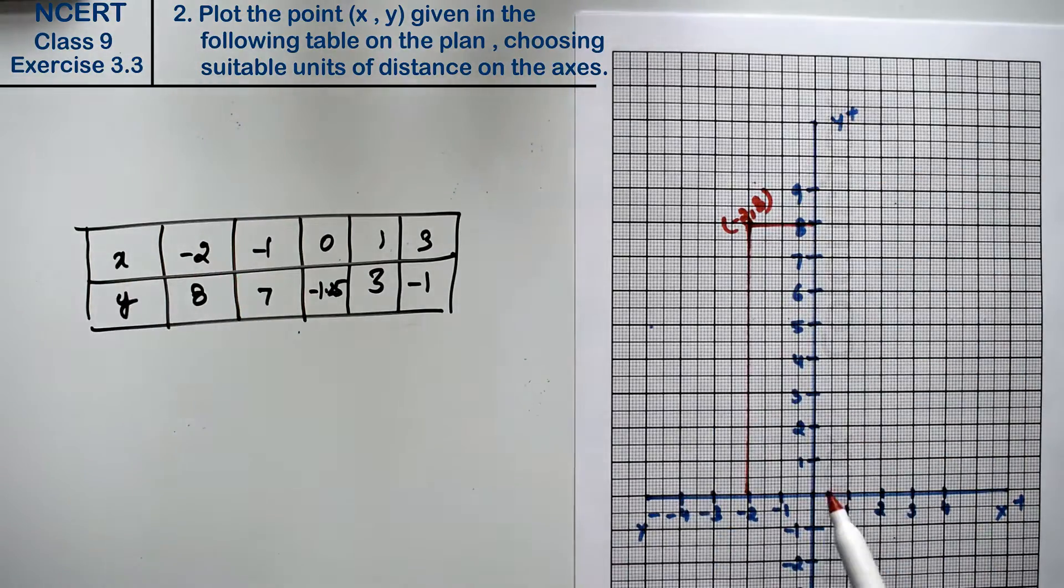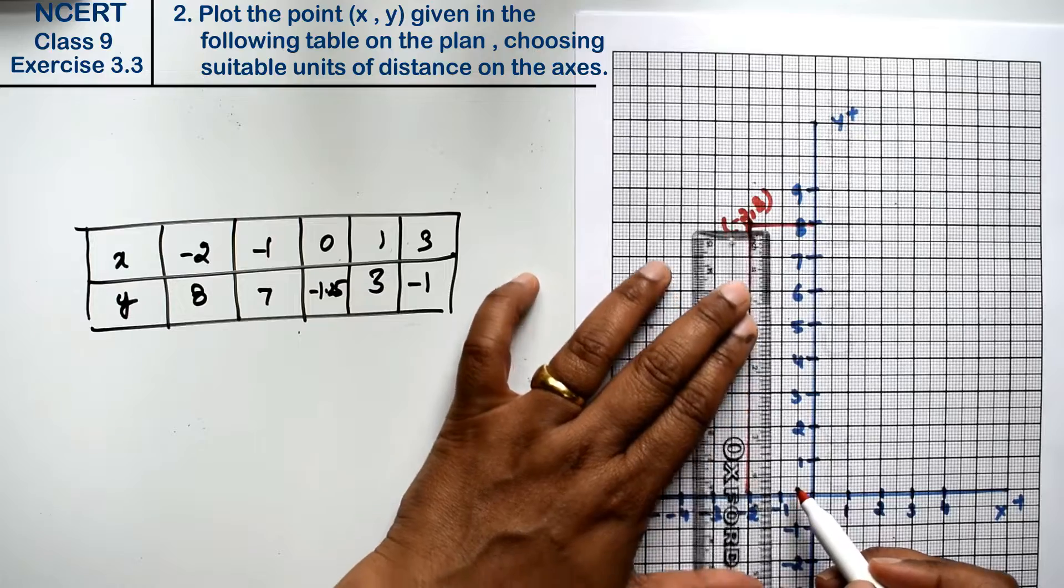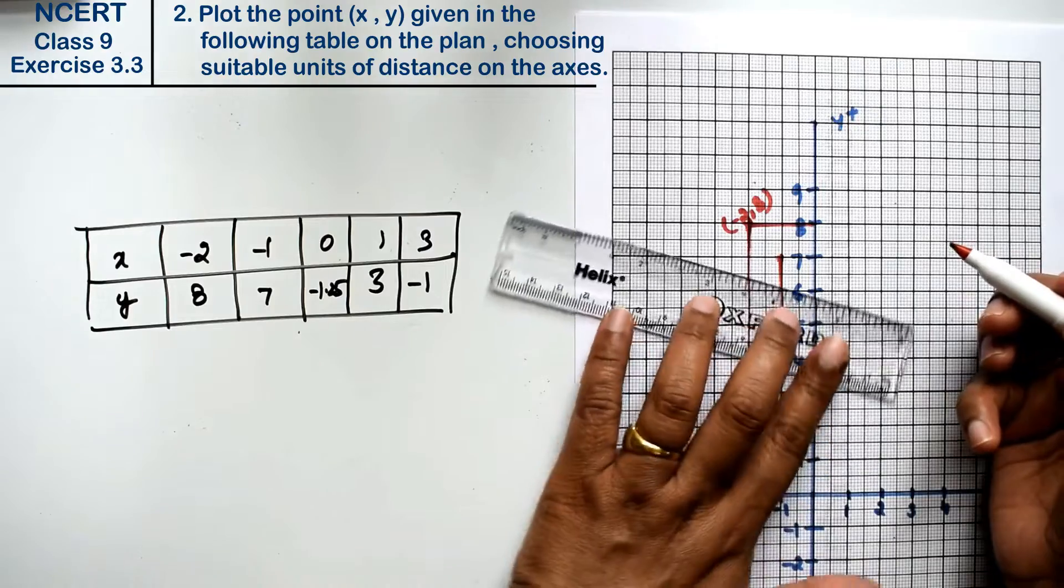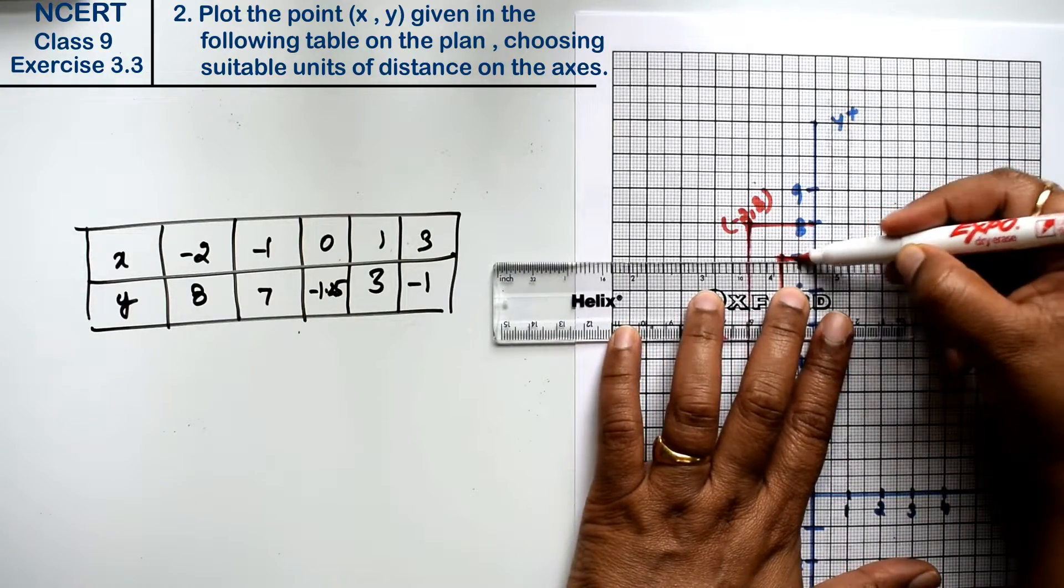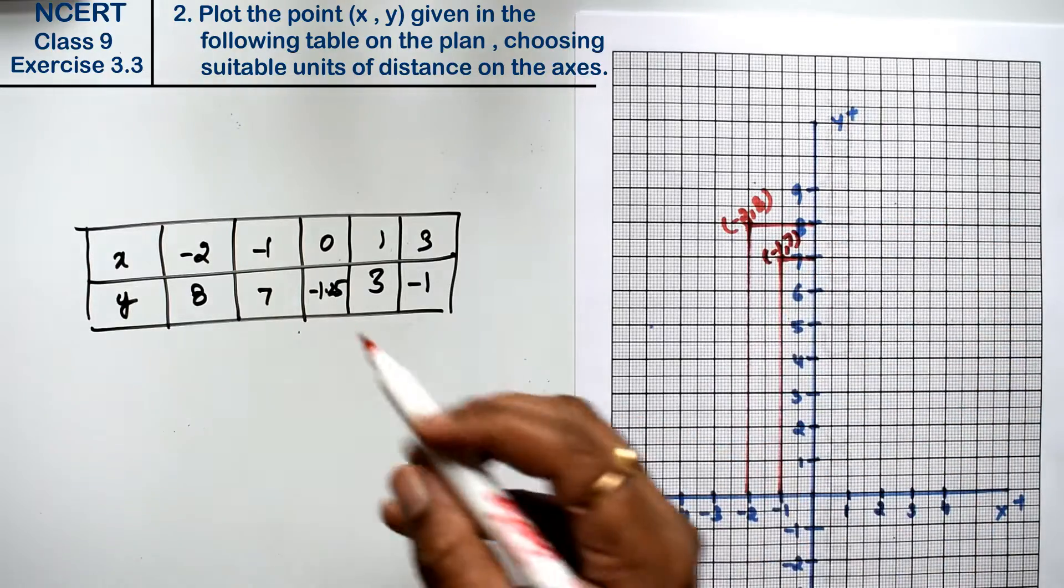Next is x is minus 1 and y is 7. 7. This is the point, minus 1 and 7.